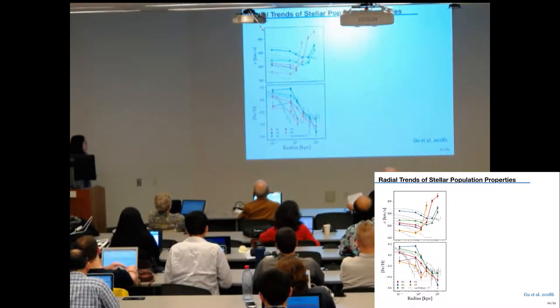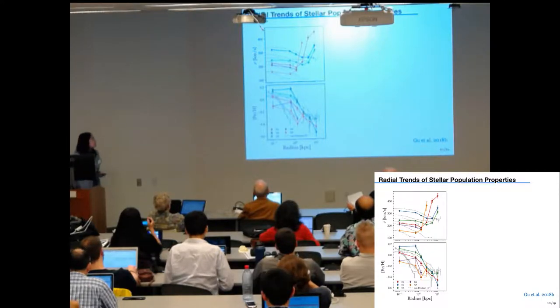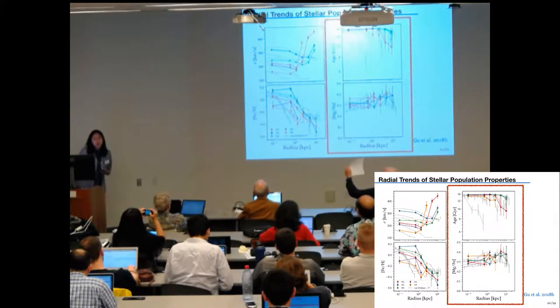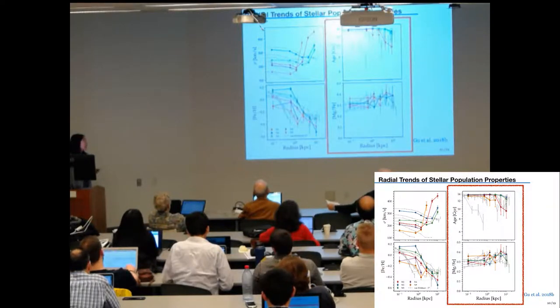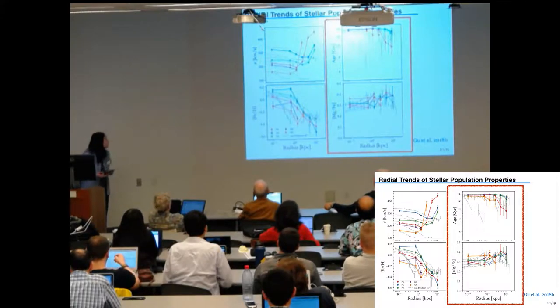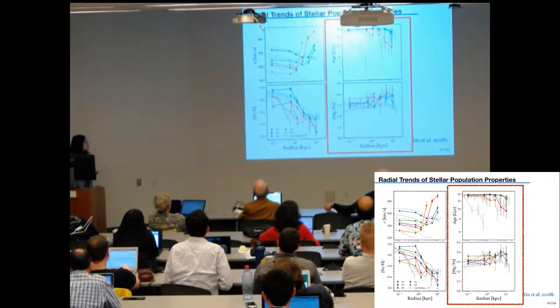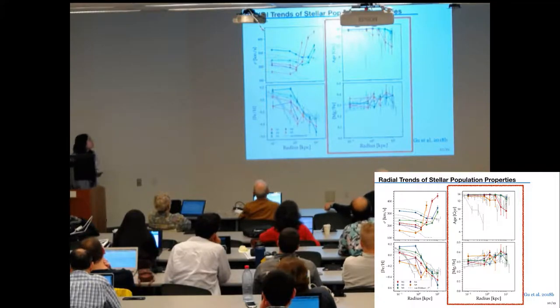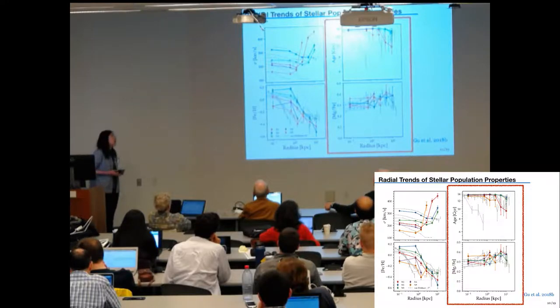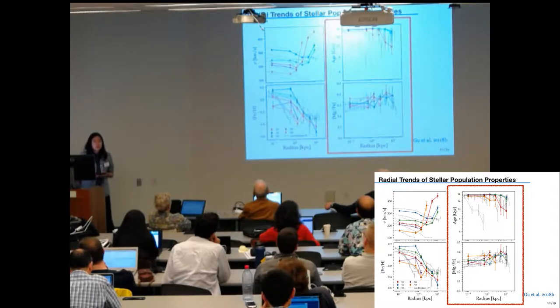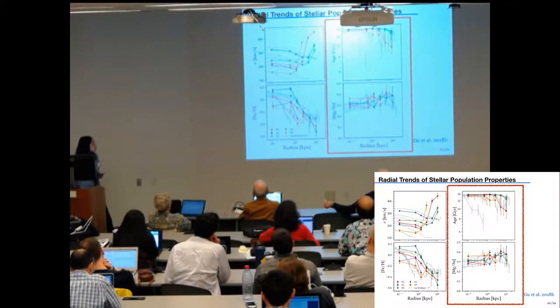And as expected for early-type galaxies, their stellar metallicity decreased with increasing radii. And more importantly, on the right side, we can see that the stellar age, even at the outskirts of these five nuclear galaxies, they're old. And they have flat radial profiles of magnesium to iron ratio. And actually, old and flat age radial profile and flat alpha-abundance profile have been observed in other studies as well. And we think they are consistent with the coordinated assembling picture we propose.